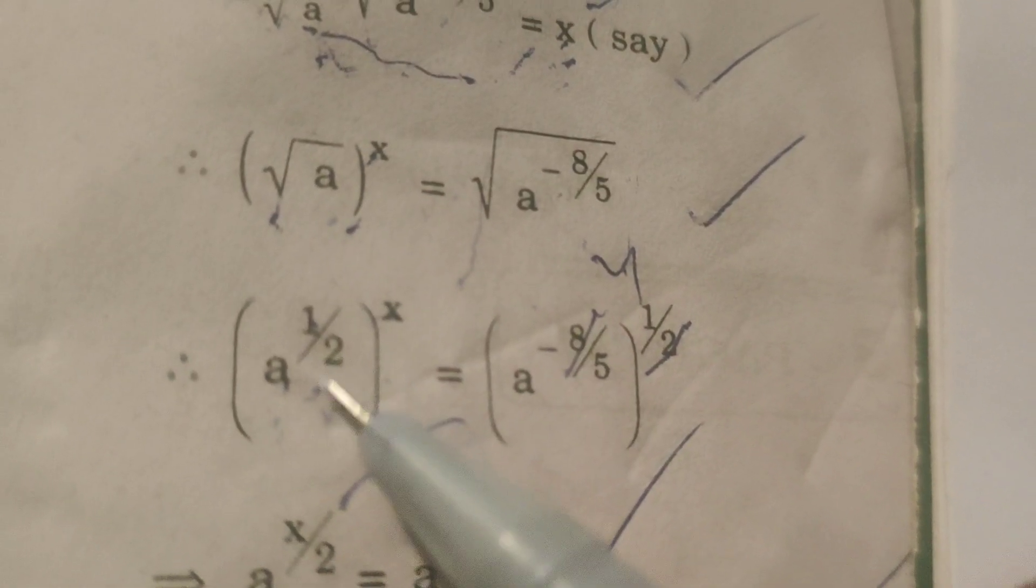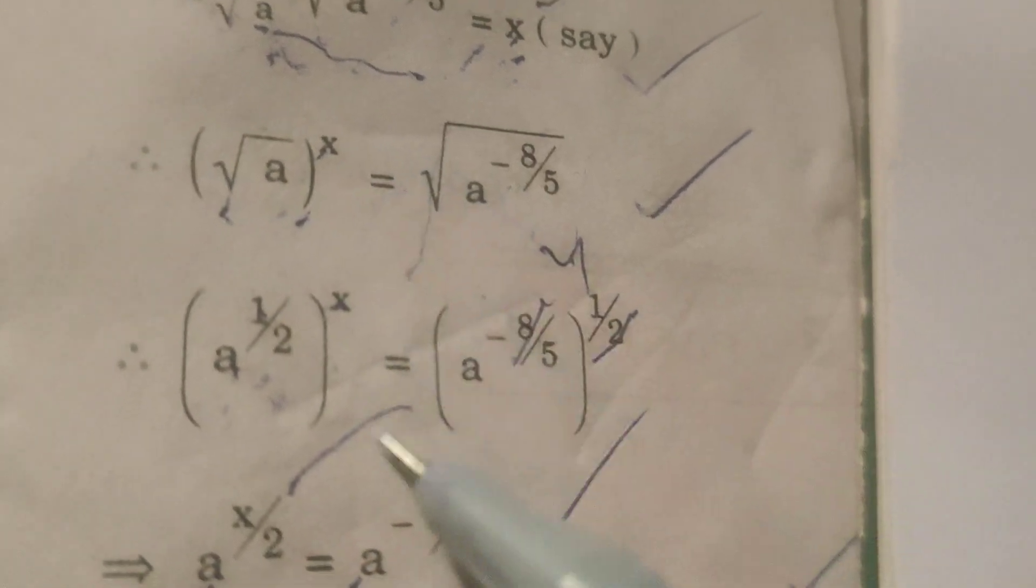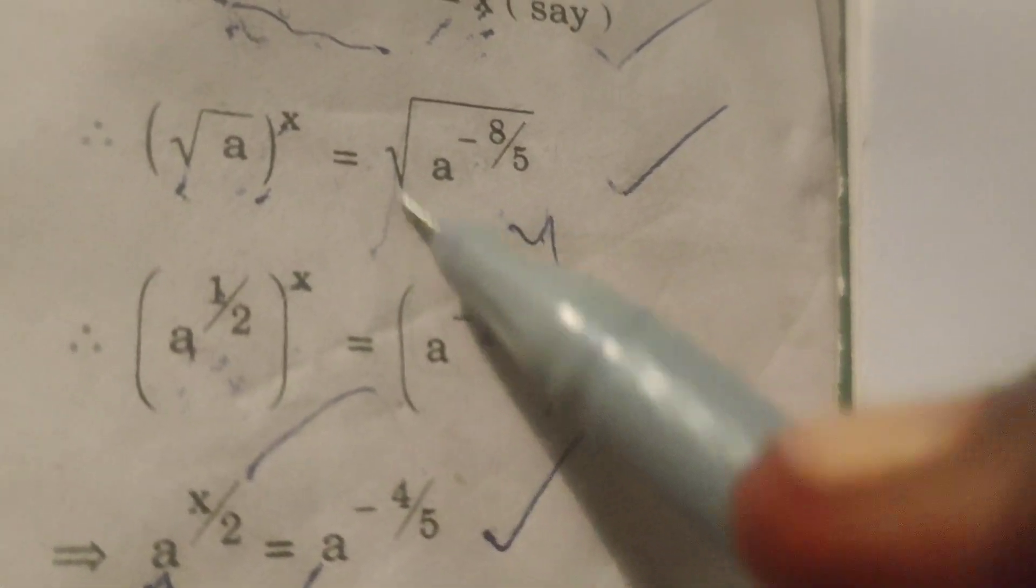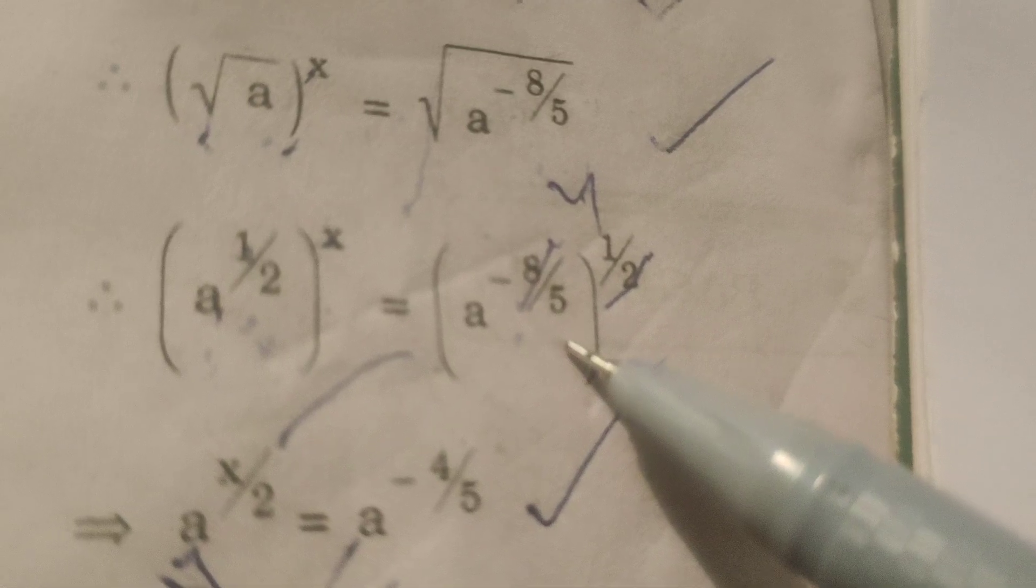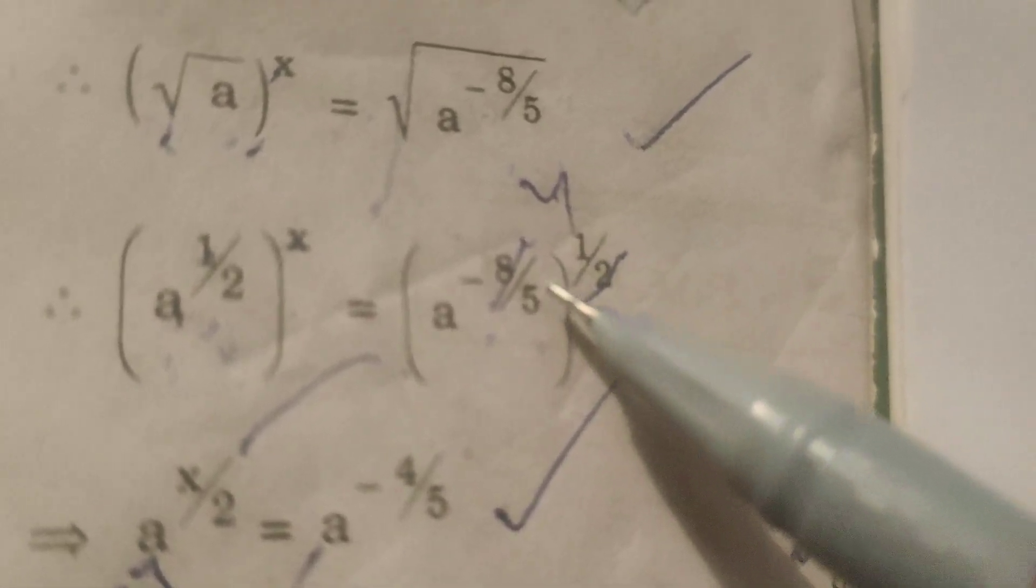Here root a means write a power 1 by 2, whole power x, equals to in this root a power minus 8 by 5, write a power minus 8 by 5, whole power 1 by 2.